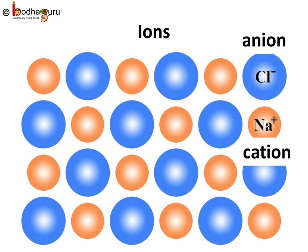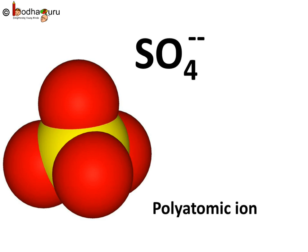The compound formed by metal and non-metal has charged species called ions. They can be positively charged, called cations, or negatively charged, called anions. Ions may consist of a single charged atom or a group of atoms that have a net charge on them. A group of atoms carrying a charge is known as a polyatomic ion. For example, sulfate ion is SO4 with two negative charges. 2 minus means 2 units of negative charge, and it also means the valency is 2.